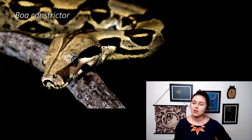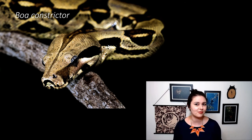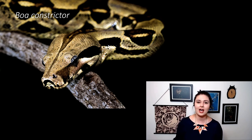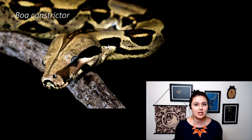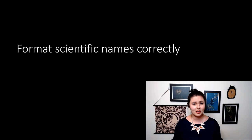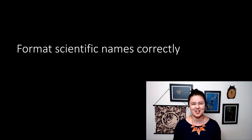The reason we have scientific names is to make sure we're talking about the same thing. There are so many different common names out there, and different people will call species different things. It's honestly really cool to look at different communities and the different names they use for the animals that naturally occur in their habitat. Again, make sure you format them correctly — this is how we code-switch in biology and tell each other that we know what we're talking about.